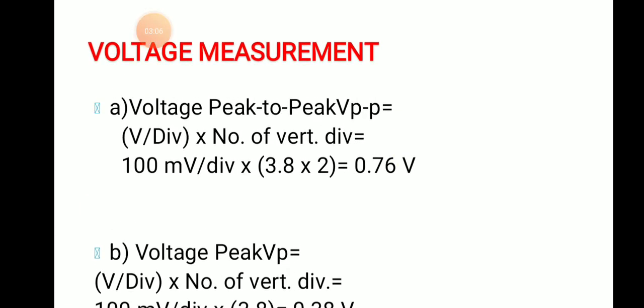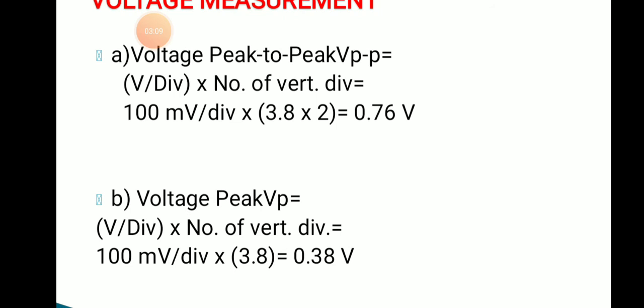Consider one example for voltage measurement. Voltage peak-to-peak equals volts per division multiplied by number of vertical divisions. Volts per division equals 100 millivolts, and the number of vertical divisions is 3.8 multiplied by 2, giving 0.76 volts — this is the complete one cycle (positive and negative half cycles). If you want to calculate only the voltage at peak, the formula is: volts per division multiplied by number of vertical divisions equals 100 millivolts multiplied by 3.8. For voltage at peak-to-peak, you must consider both the positive and negative half cycles.